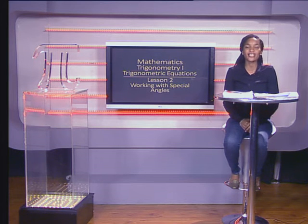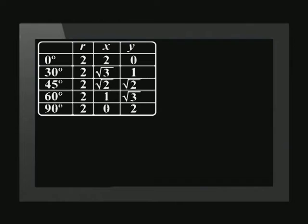Welcome to this lesson on working with special angles. Special angles include those angles which are one-half, one-third, and two-thirds of a right angle — in other words, 45 degrees, 30 degrees, and 60 degrees. We are expected to know the value of trigonometric ratios for 0 and 90 degrees. You can find this table in the series guide on our website.